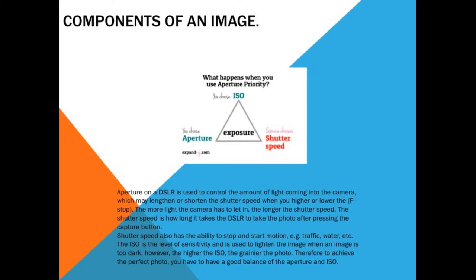The ISO is the level of intensity and is used to lighten the image when the image is too dark. However, the higher the ISO, the grainier the photo. Therefore, to achieve the perfect photo, you have to have a good balance of aperture and ISO.